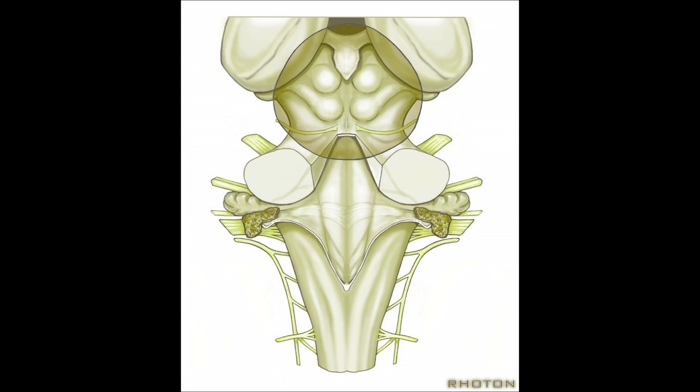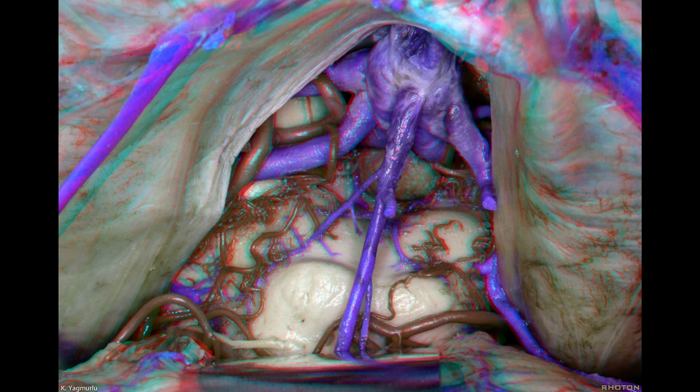The surgical target area for the pericollicular entry zones is the dorsal surface of the midbrain. The pericollicular entry zones can be reached by way of the supracerebellar infratentorial approach, which also exposes the pineal gland and the superior and inferior colliculi. Transverse incisions are made just above or below the colliculi depending on the location of lesions. The nuclei of the superior and inferior colliculi are located just deep to the surface. The superior colliculus is involved in the reflex movement of eyes and head, and the inferior colliculus is involved in the auditory system. The deep structure is the red nucleus in the dorsal midbrain, which extends up from the mid-level of the inferior colliculus.